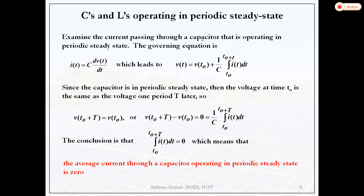The basic concept: examine the current passing through the capacitor operating in periodic steady state. The governing equation is i_C = C·dv/dt. The voltage across the capacitor is initial voltage plus charge accumulation (Q/C). In one time period, the net charge accumulation is zero. If t equals capital T (one time period), this term must be zero, meaning initial voltage equals final voltage. Therefore, the average current through a capacitor operating in periodic steady state is zero — this is a very important concept.